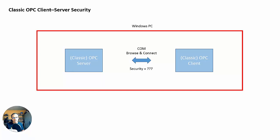But with OPC UA, the OPC UA clients and servers are going to be all over the network — the IT network, the plant network, all that sort of stuff. So you need some security. So what does that security look like? Let's look at that now.